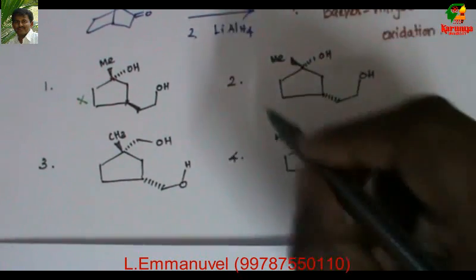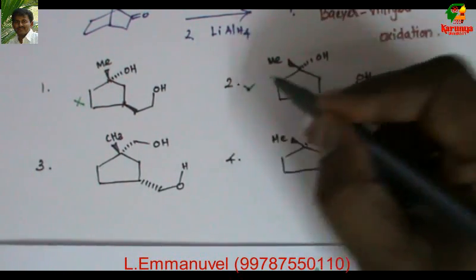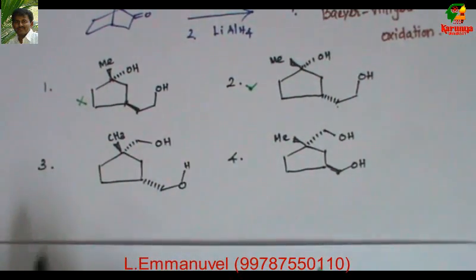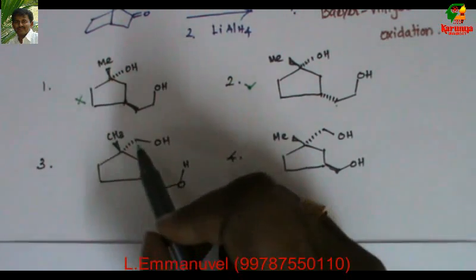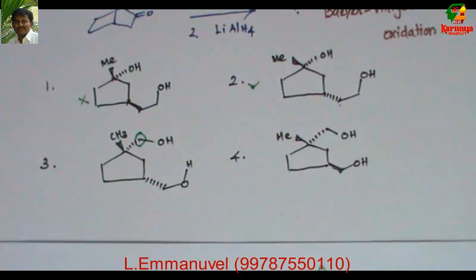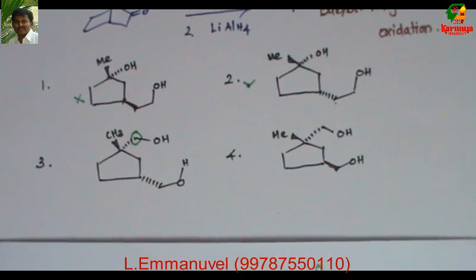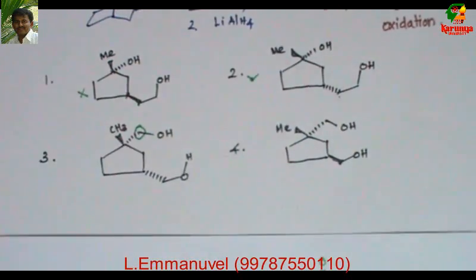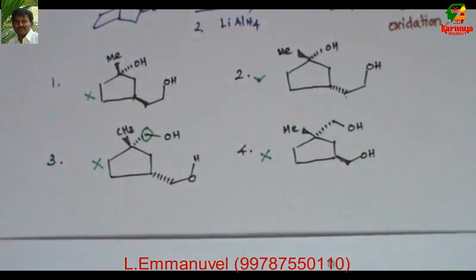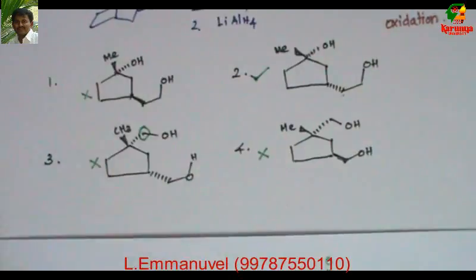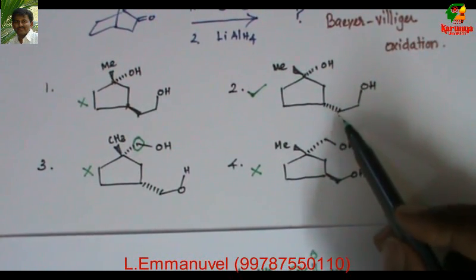Looking at the third and fourth options, the product structure itself is different — here the side chain is CH2OH rather than CH2CH2OH, meaning one extra carbon has been attached. That is not possible based on our mechanism. So the answer is option 2, in which the hydroxyl group and the CH2CH2OH side chain are cis to each other.